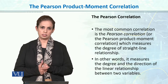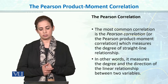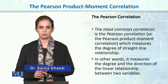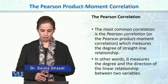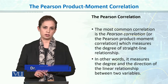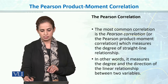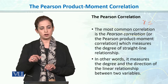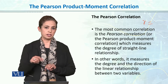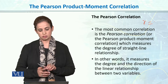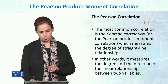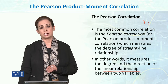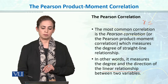The most common correlation method we use to calculate the correlation coefficient is the Pearson correlation, which is also called Pearson product-moment correlation, which measures the degree of straight-line relationship. R denotes the Pearson correlation, and when we calculate it, it tells us the degree of the relationship, the direction of the relationship, and the linearity of the relationship. Pearson product-moment, which is our linear relationship, calculates strength and magnitude and also tells us its direction.